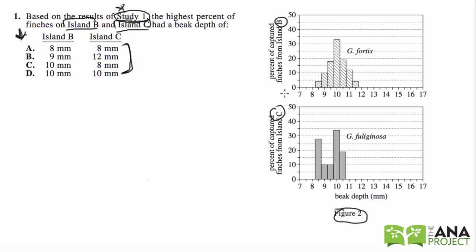So obviously we look at this, it says beak depth. So these are probably the right graphs to look at. So this is the highest percent of finches on island B had, so we'll look at here, we'll see it says 10, so that's the highest for island B.